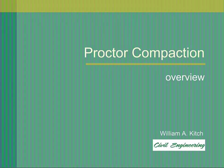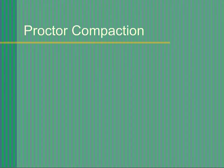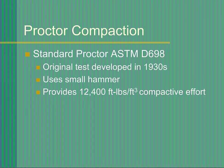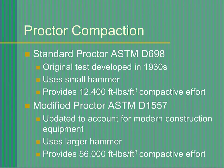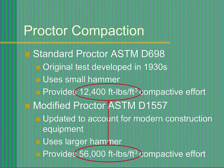Proctor compaction testing: an overview. The Proctor compaction test provides the basis for quality control testing of compacted fills. The original test method, commonly known as the standard Proctor test, was developed in 1933 for construction processes in use at that time. This test has largely been replaced by a revised method called the modified Proctor test, which uses nearly five times the energy to compact the soil. This additional compaction energy accounts for the increased capacity of modern construction equipment.